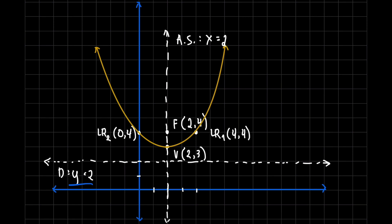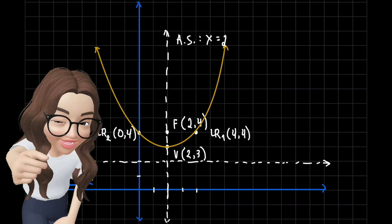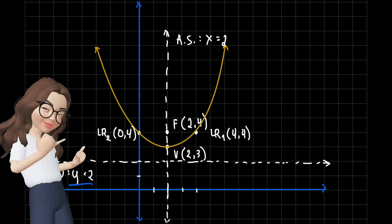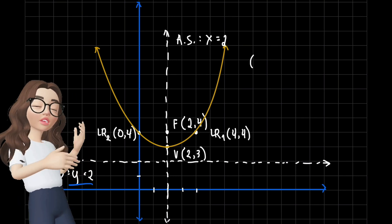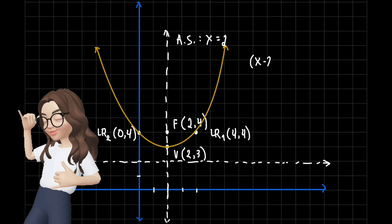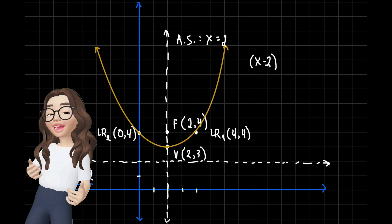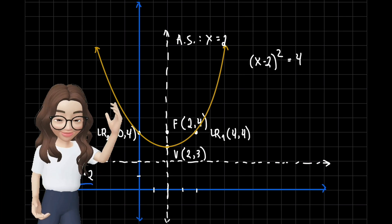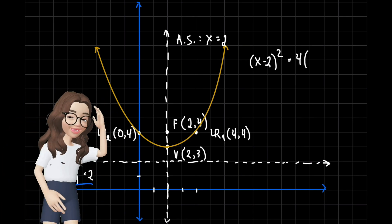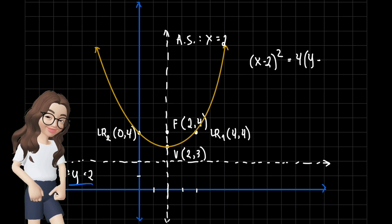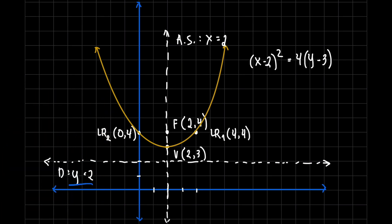Let us not forget the name of our parabola in standard form: the quantity (x minus 2) squared is equal to 4 times (y minus 3). And that's it.